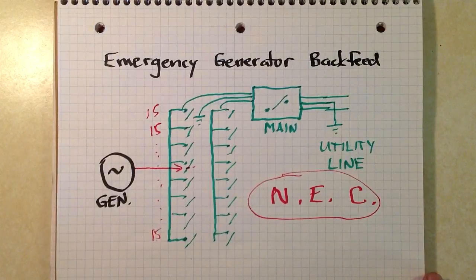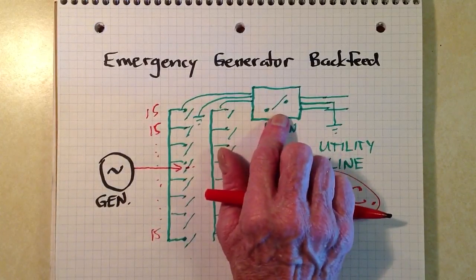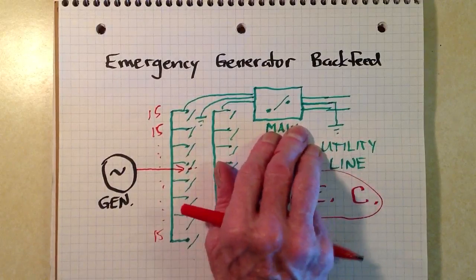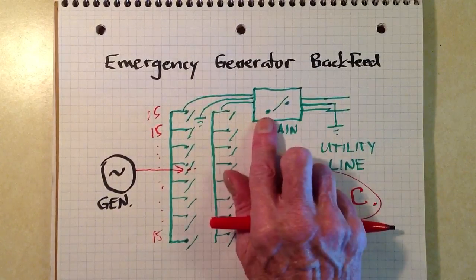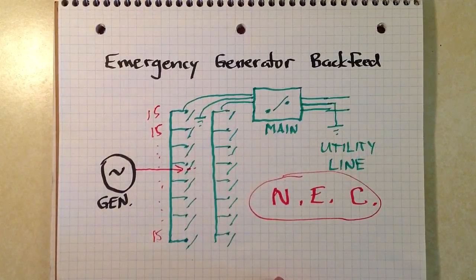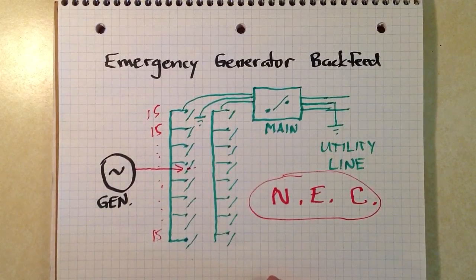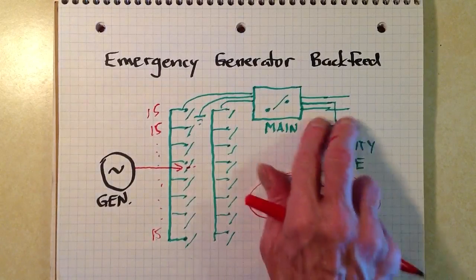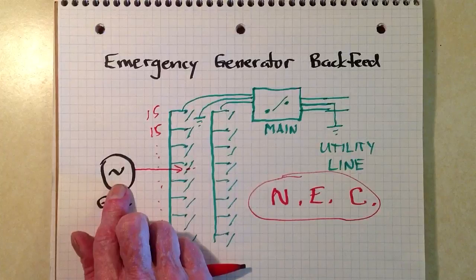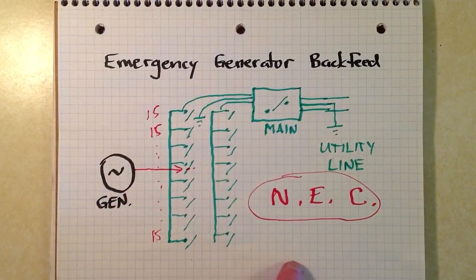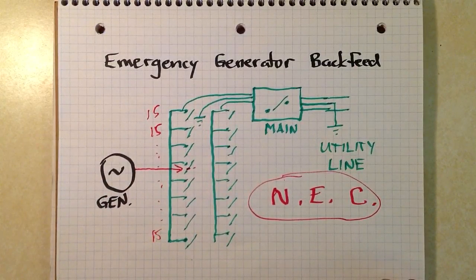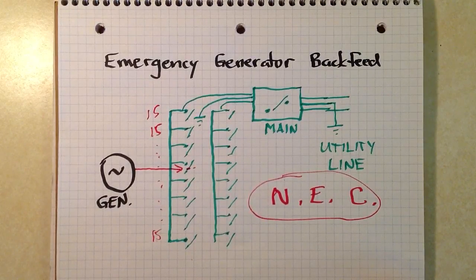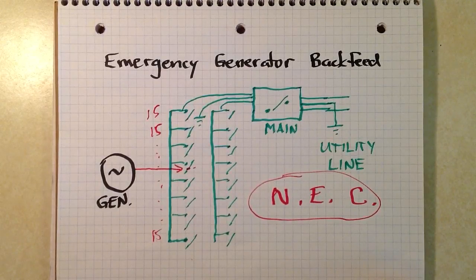Moreover, should you happen to forget about turning the generator off and disconnecting it before you turn that main breaker back on, when the utility power comes back on? If you switch that main on, just happen to forget to switch it on, while that generator is still connected and running, then the utility current is going to buck the generator current. More than likely, it'll blow the fuse in the generator. But it could also produce more serious side effects, which would wake you up in a hurry.